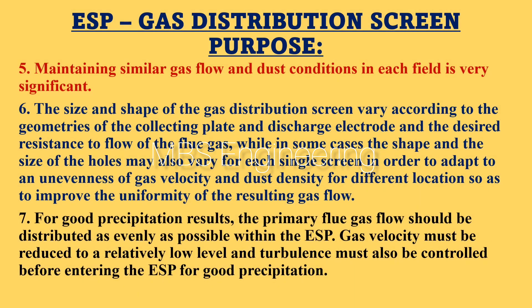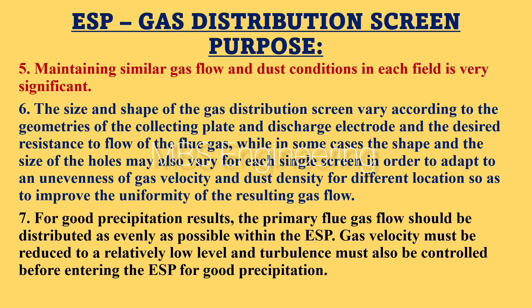Point 5: maintaining similar gas flow and dust conditions in each field is very significant. Point 6: the size and shape of the gas distribution screen vary according to the geometries of the collecting plate and discharge electrode, and the desired resistance to flow of the flue gas. In some cases, the shape and size of the holes may also vary for each single screen to adapt to unevenness of gas velocity and dust density at different locations, improving uniformity of the resulting gas flow.